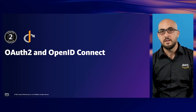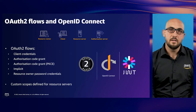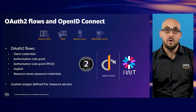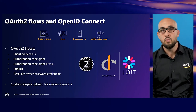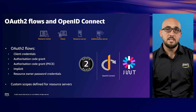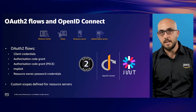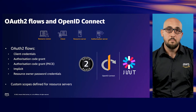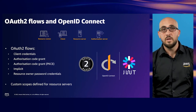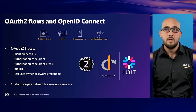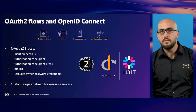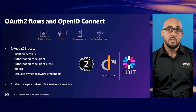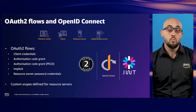Let's jump into these standards to get a better understanding. OpenID Connect 1 is a simple identity layer on top of the OAuth 2 protocol. It allows clients to verify the identity of end users based on authentication performed by an authorization server, as well as obtain basic profile information about the end user in a REST-like manner. OIDC allows clients of all types — including web-based, mobile, and JavaScript clients — to request and receive information about authenticated sessions and end users. The specification suite is extensible, allowing participants to use optional features such as encryption of identity data, discovery of OpenID providers, and session management.